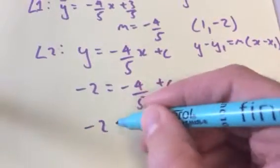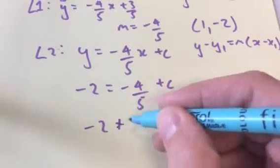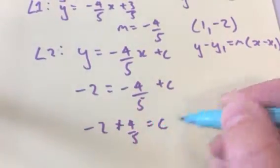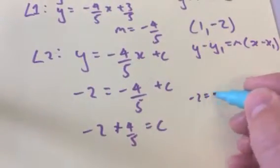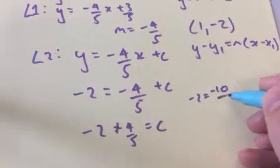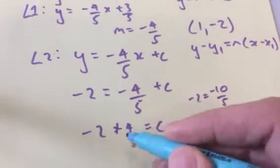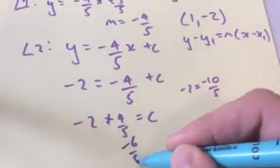And then it'll be minus 2 plus 4 fifths equal to c. Now I know that 2 is minus 10 over 5. Minus 10 plus 4 fifths is minus 6 over 5.